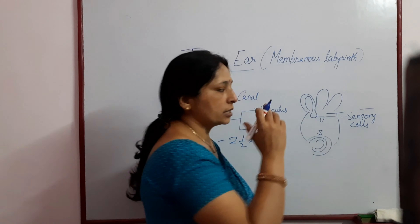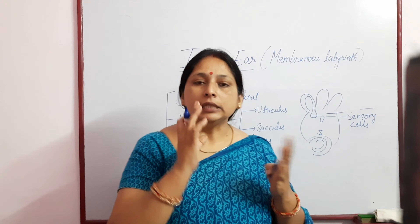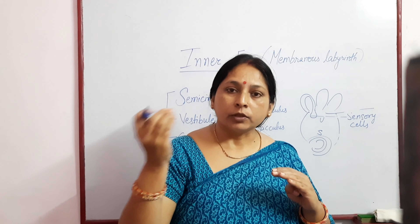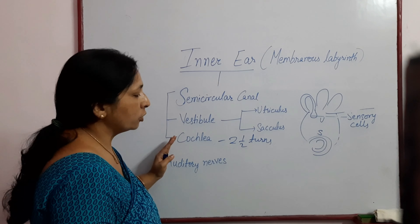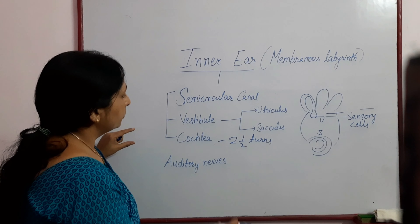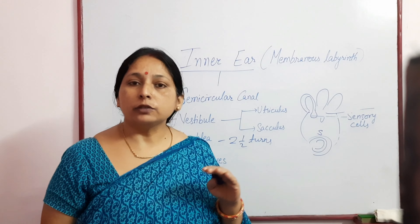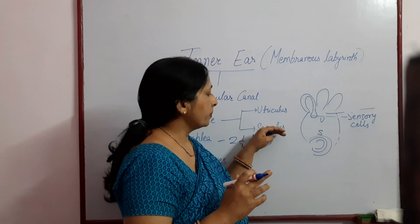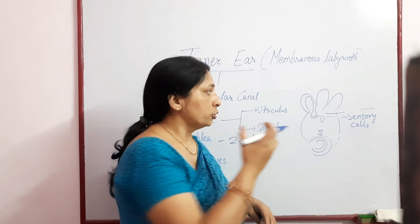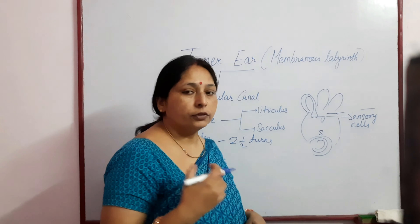From the vestibule, waves and auditory messages are sent through the auditory nerves to the brain. The main role of the cochlea is hearing. The sacculus is responsible for static balance - when the body is stationary or at rest. The utriculus is for dynamic balance through the sensory cells in the ampullae. Summary: utriculus for dynamic balance, sacculus for static balance, cochlea mainly concerned with hearing.